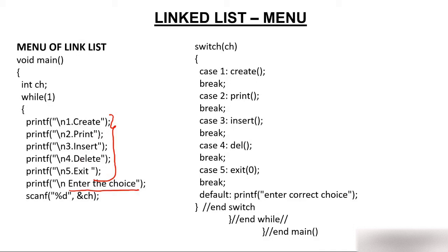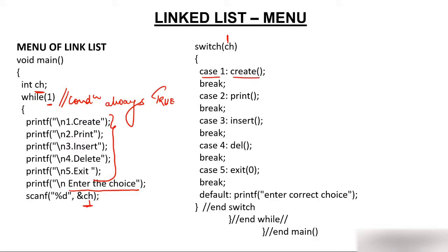In the main function we have created a variable 'ch' and a while(1) loop, meaning the condition is always true. The program presents multiple options, you press a number which is scanned into 'ch', and the program uses a switch statement — pressing 1 jumps to case 1 which calls the create function.